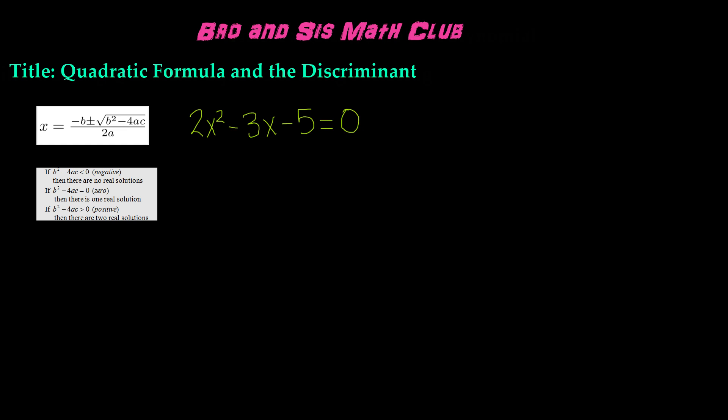Hey guys, welcome back to Berencz's Math Club. Today we'll be learning about the quadratic formula and the discriminant. The quadratic formula is x equals negative b plus or minus the square root of b squared minus 4ac, over 2a.